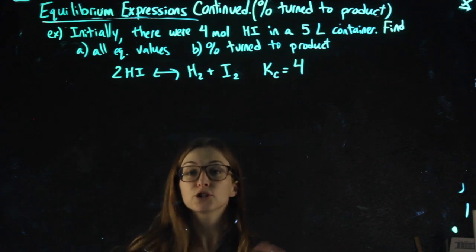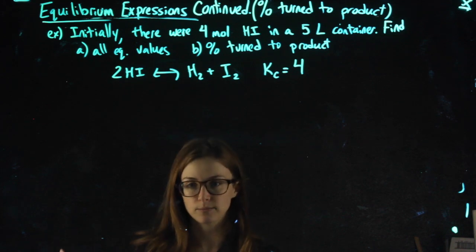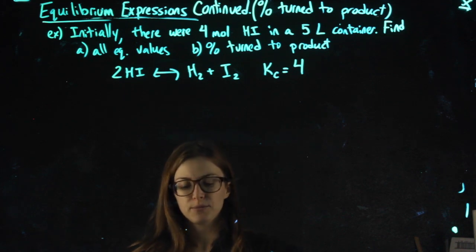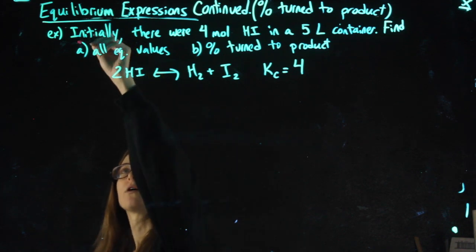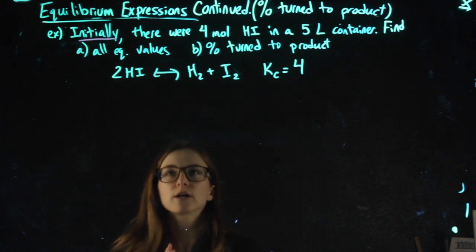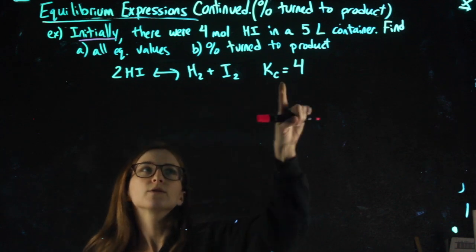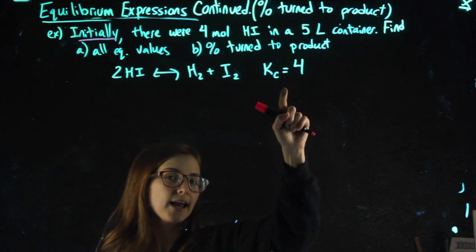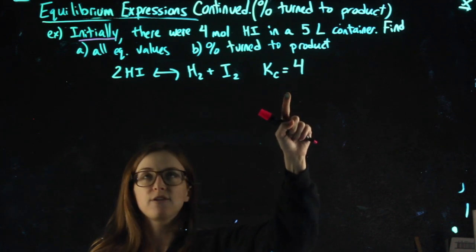Okay, so this will start very similarly to the problems you've already done before. When I see the word 'initially,' I start doing an ICE chart using molarity. Something you'll notice that's different is we're given a Kc value, so you'll see why in a minute.